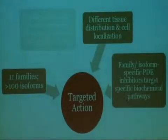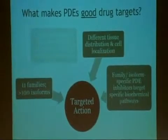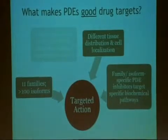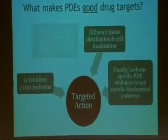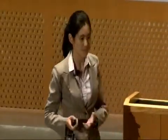It also turns out that PDEs are really good drug targets because of their diversity and their specificity. In humans, there are 11 different families of phosphodiesterases, and due to alternative splicing, this can give rise to more than 100 isoforms or structural variants. These isoforms are distributed across different tissues and control specific biochemical pathways, giving us the perfect opportunity to target certain disease pathways without affecting normal ones.